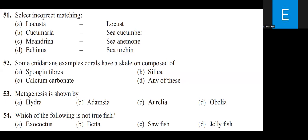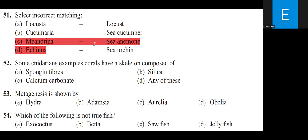Select the incorrect matching. Locusta is Locust, Cucumeria is Cucumber, Meandrina is C Anemone — this is incorrect. Echinus is Sea Urchin (C Archin). The incorrect match among these is Meandrina, which is incorrectly matched with C Anemone.